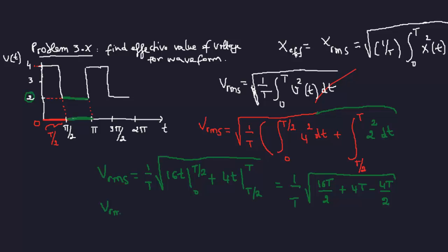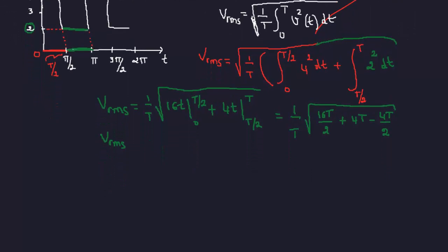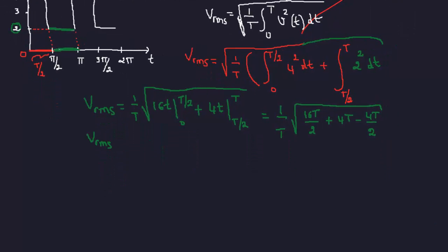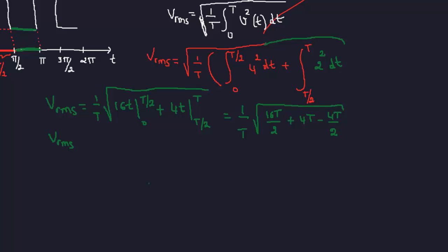So v_rms is finally 1/t square root of 16 minus 4, that's 12t, 6, that's 10t. Okay, so we have 10t here.